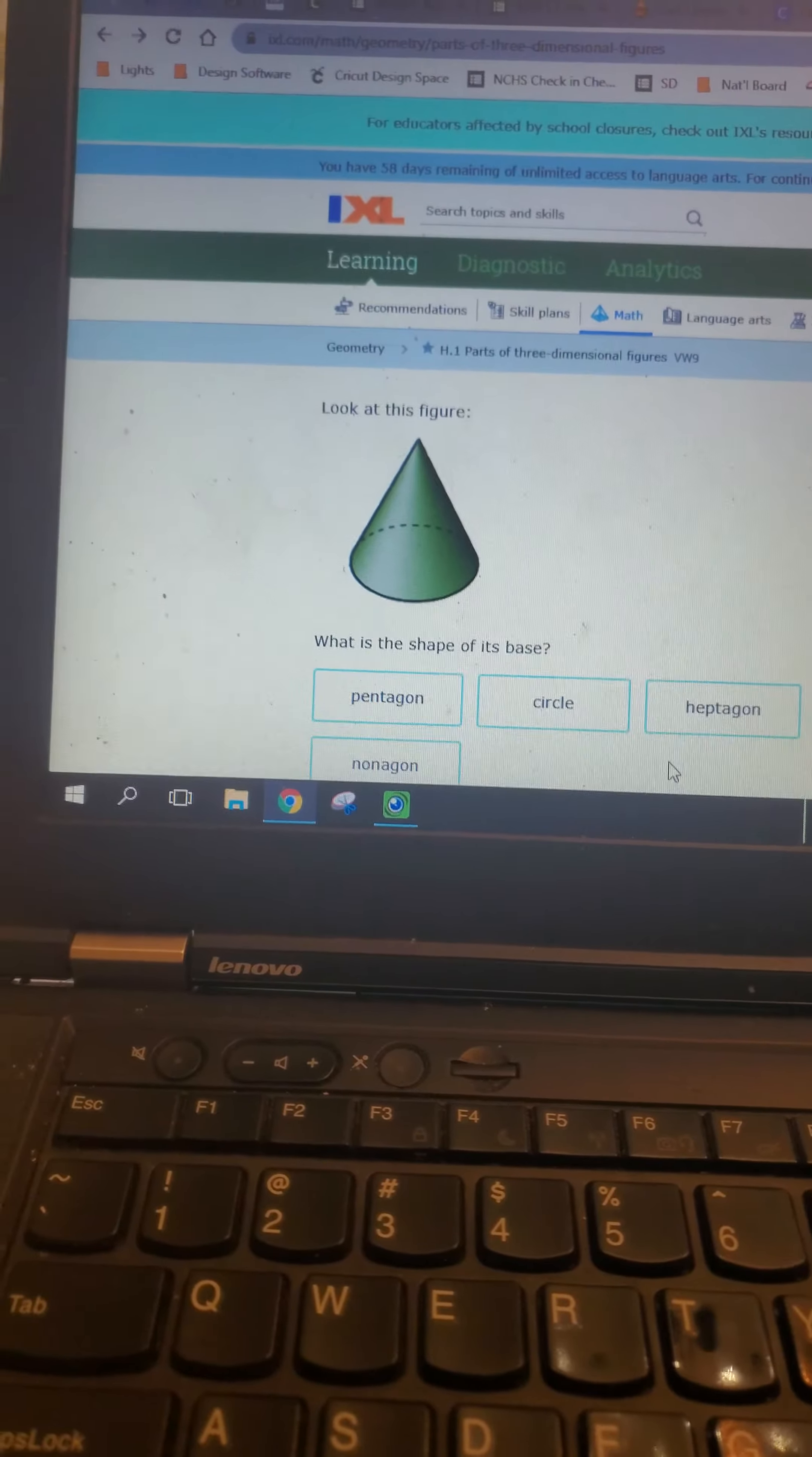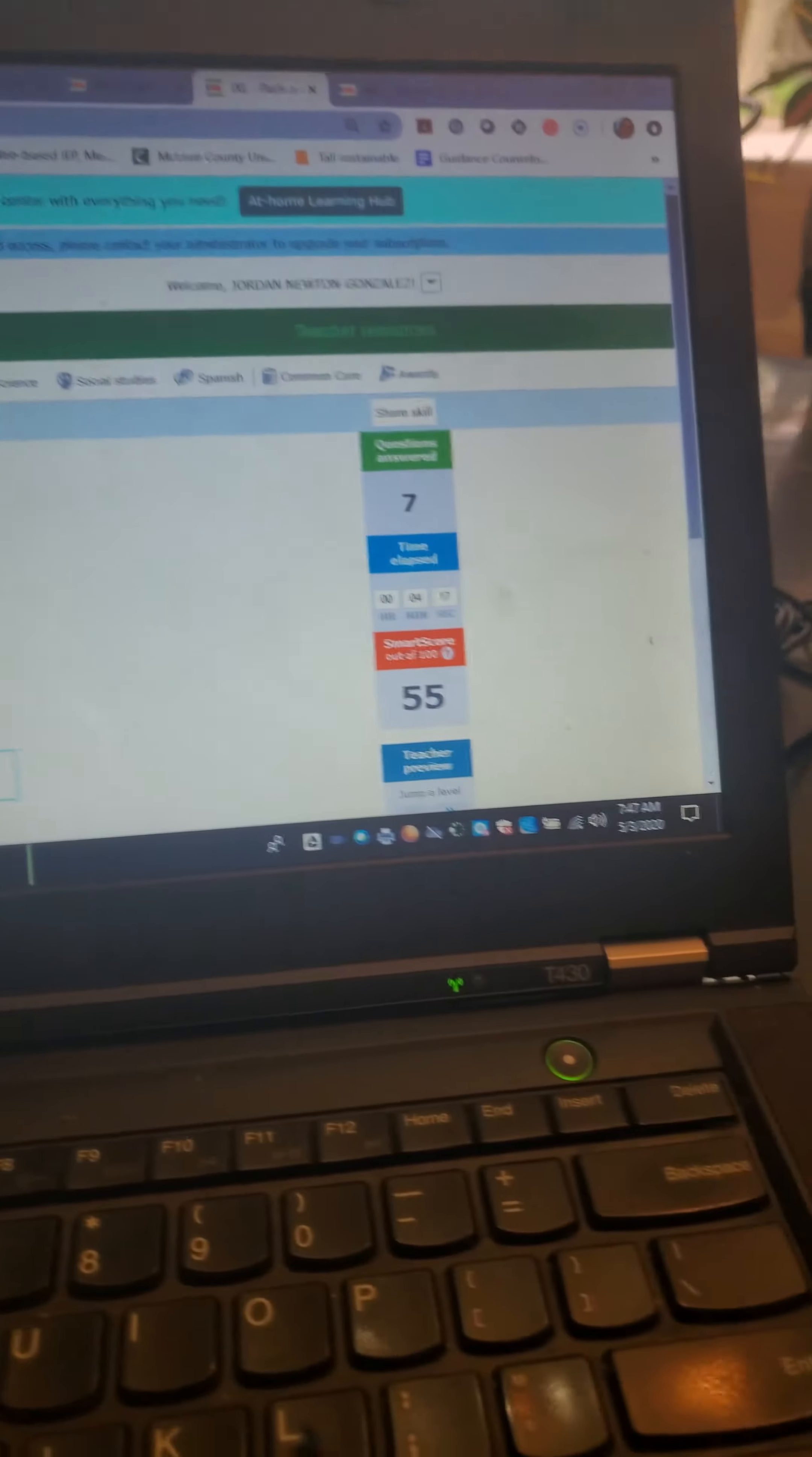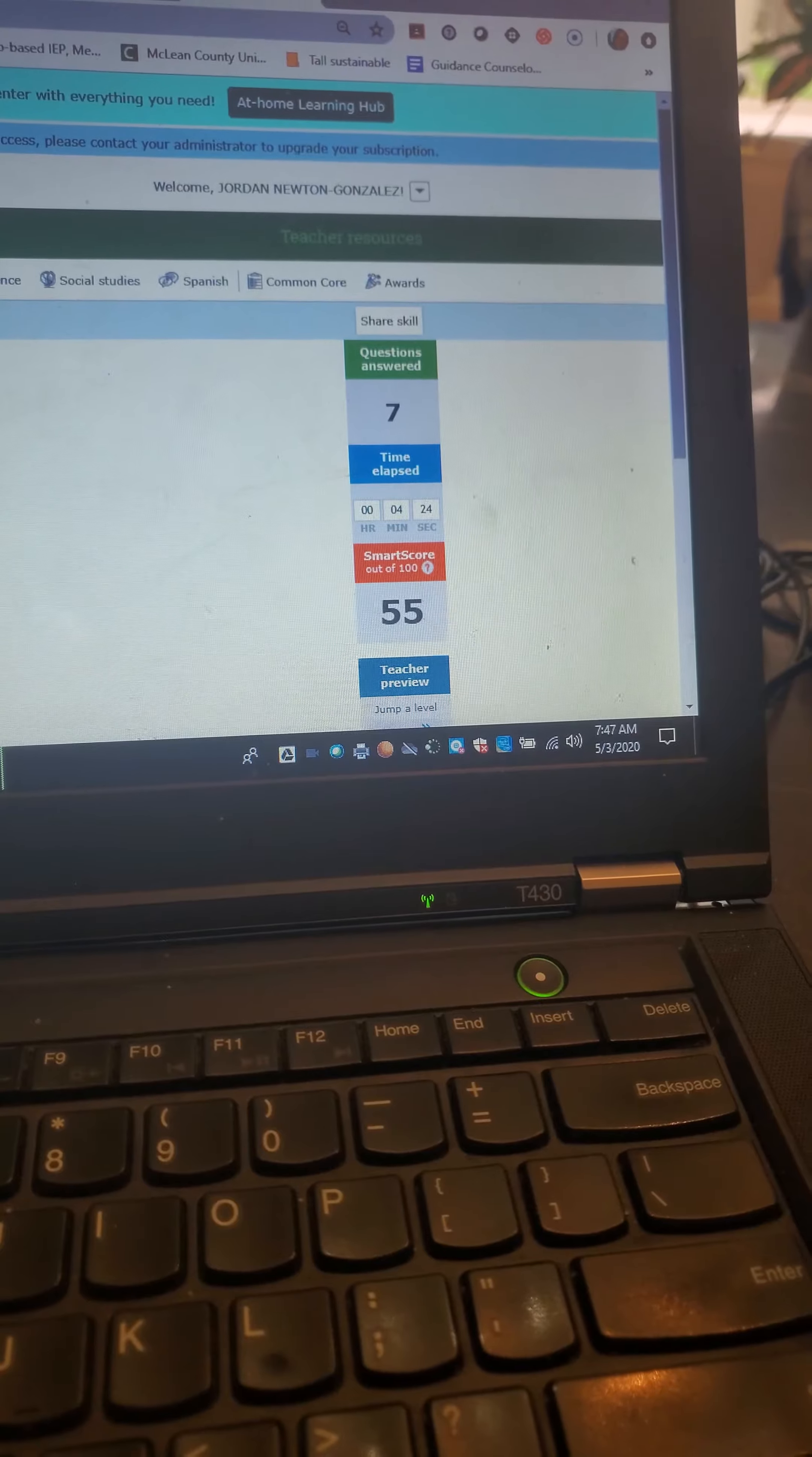And then here we have a cone. So the shape of its base that it's sitting on right here is a circle, and that gets me to a smart score of 50. So that one should be pretty easy for you to do, just looking at the shapes and naming the bases.